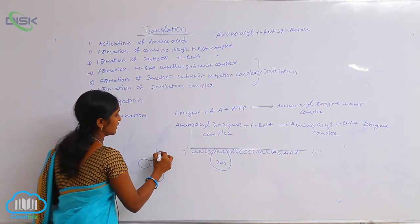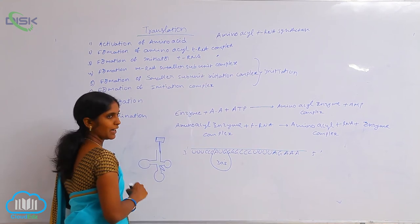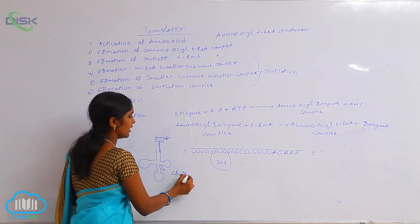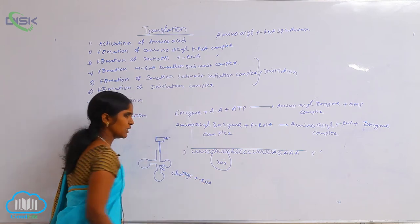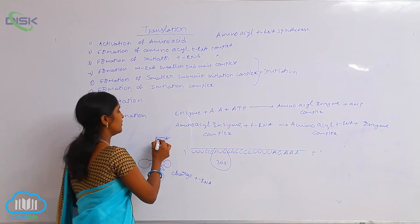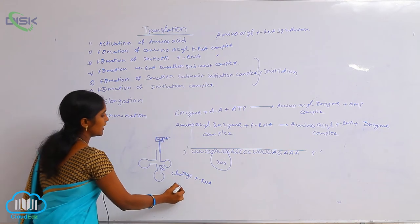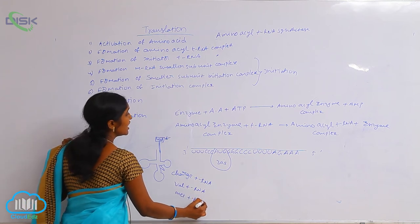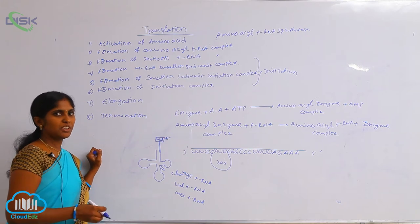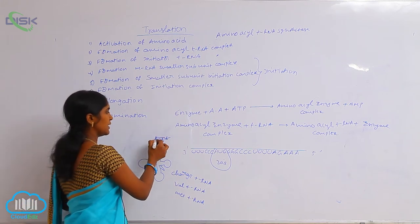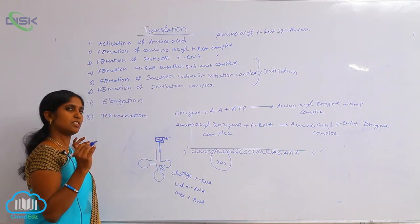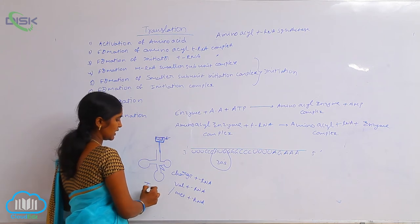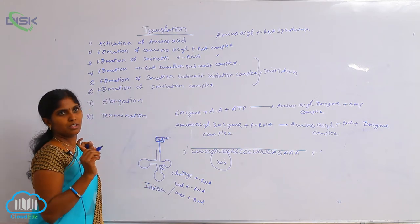The tRNA has one arm, and at that arm the amino acids are loaded. When amino acids are loaded, this is called charged tRNA. There are different types of tRNA according to different types of amino acids. For example, valine tRNA is produced when valine amino acid is added. Methionine tRNA is also called initiator tRNA because it initiates protein synthesis. Like this, different amino acyl tRNA complexes are formed.